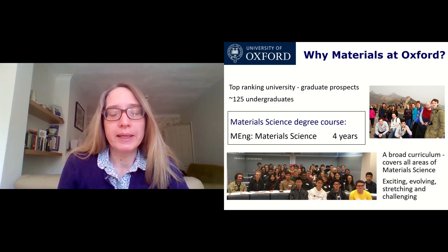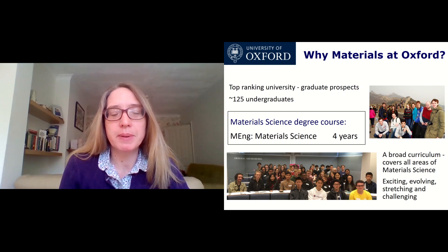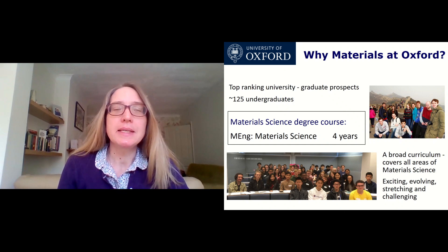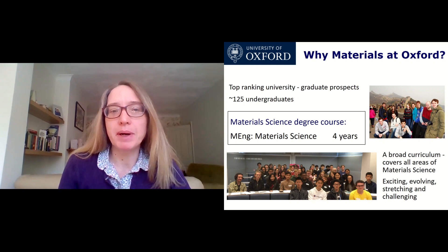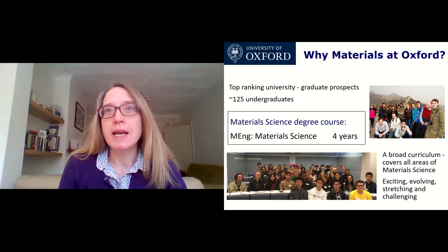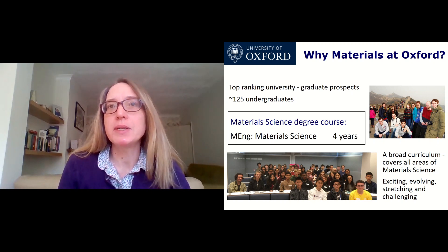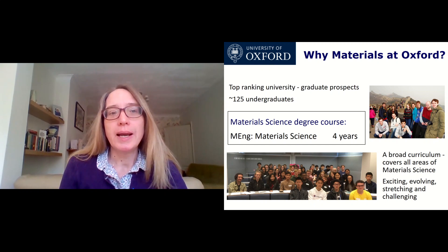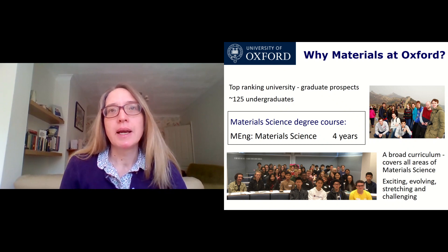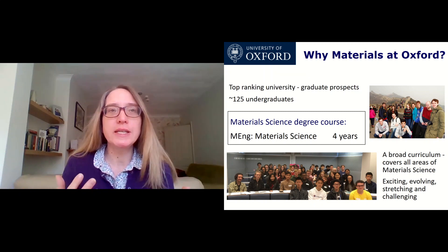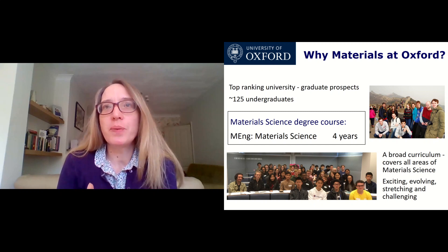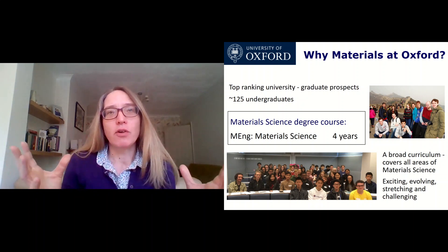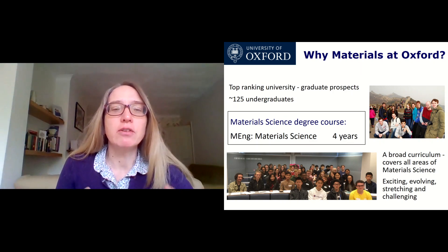So why do materials at Oxford? It is very much a top ranking university. We have material science experts, world experts within the department, and we have a growing undergraduate community and a growing postgraduate community as well. And that's indicative of a science that's evolving and is very much in demand. There's approximately now about 40 undergraduates in a year group. So if you are applying for 2021 entry, you will be looking hopefully to be one of approximately 40 students.